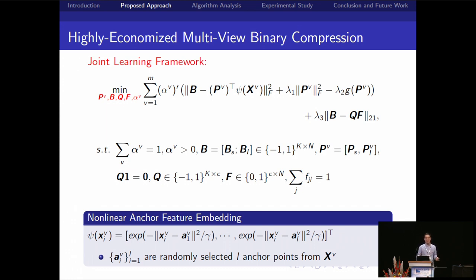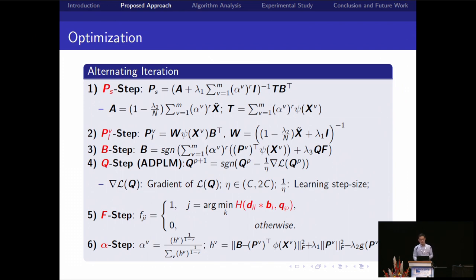Moreover, we use the Nelly anchor feature here to amplify the representation capabilities of the original feature. You know that the objective function here has three discrete constraints: B, Q, and F. This problem is very difficult because it's an NP-hard problem. So here we develop an alternating optimization algorithm.